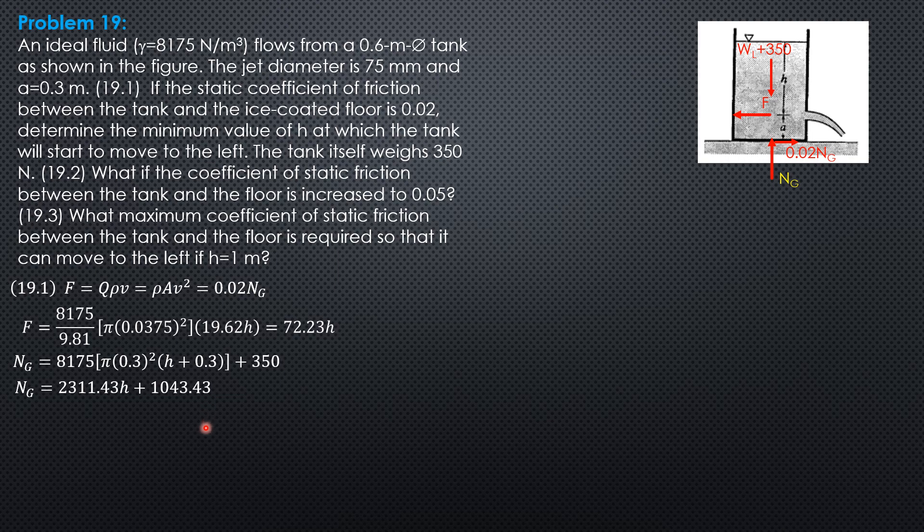So equating, 72.23H equals 0.02 times 2311.43H plus 1043.43, simplifying the right side.